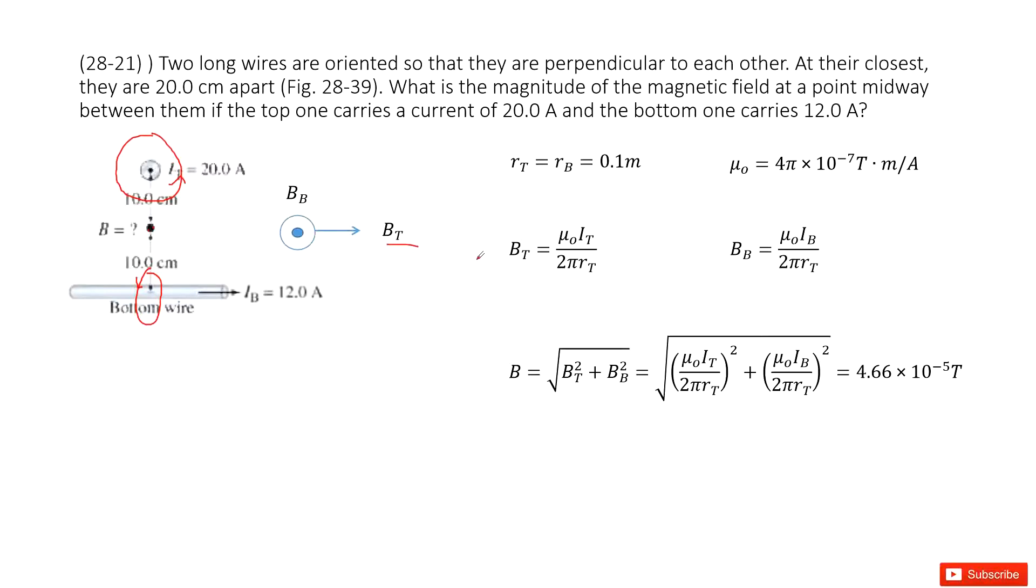So very easily we can find the BT. From the top wire, it's just mu-naught current IT divided by 2 pi RT. And then the bottom wire, we have BB as mu-naught IB divided by 2 pi RB.